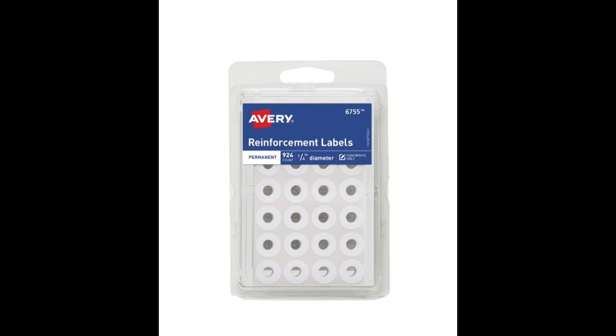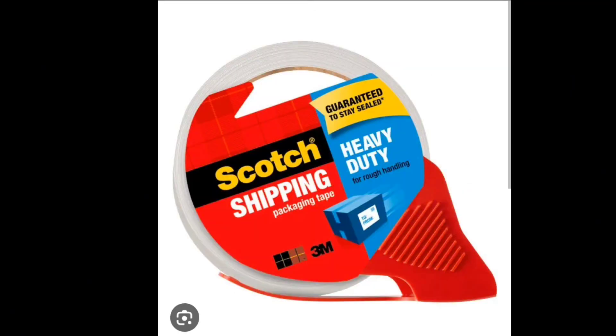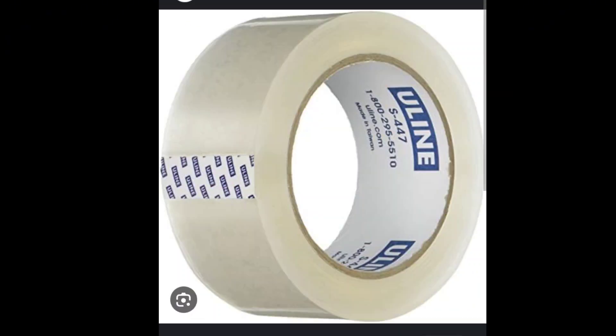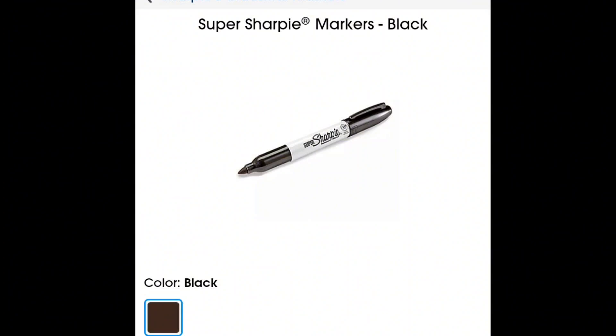The first thing you will need to make the aiming aid is circular paper reinforcement stickers. Any brand will do. The second thing you will need is tape. You can use packing tape, masking tape, or painters tape. You just need to make sure that it's one to three inches wide. And finally, you'll need a black Sharpie and a ruler, and that completes our list.